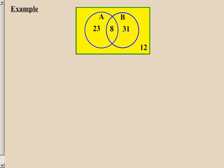Okay, let's look at another example. Copy down this Venn diagram. We have a set A and a set B. There are 8 values in the overlap of the two sets. There are 23 values in the set A that are not in the intersection. There are 31 values in set B that are not in the intersection. And there are 12 values that did not find their way into set A or set B.